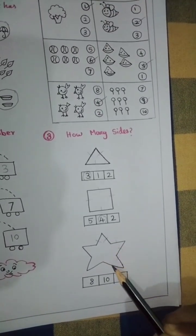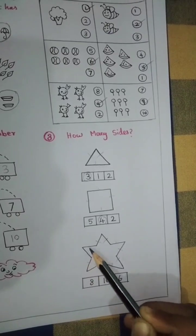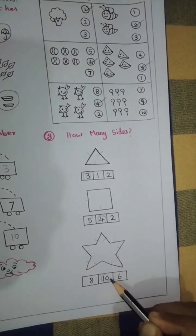Last one is star. 1, 2, 3, 4, 5, 6, 7, 8, 9, 10 sides. Circle number 10.